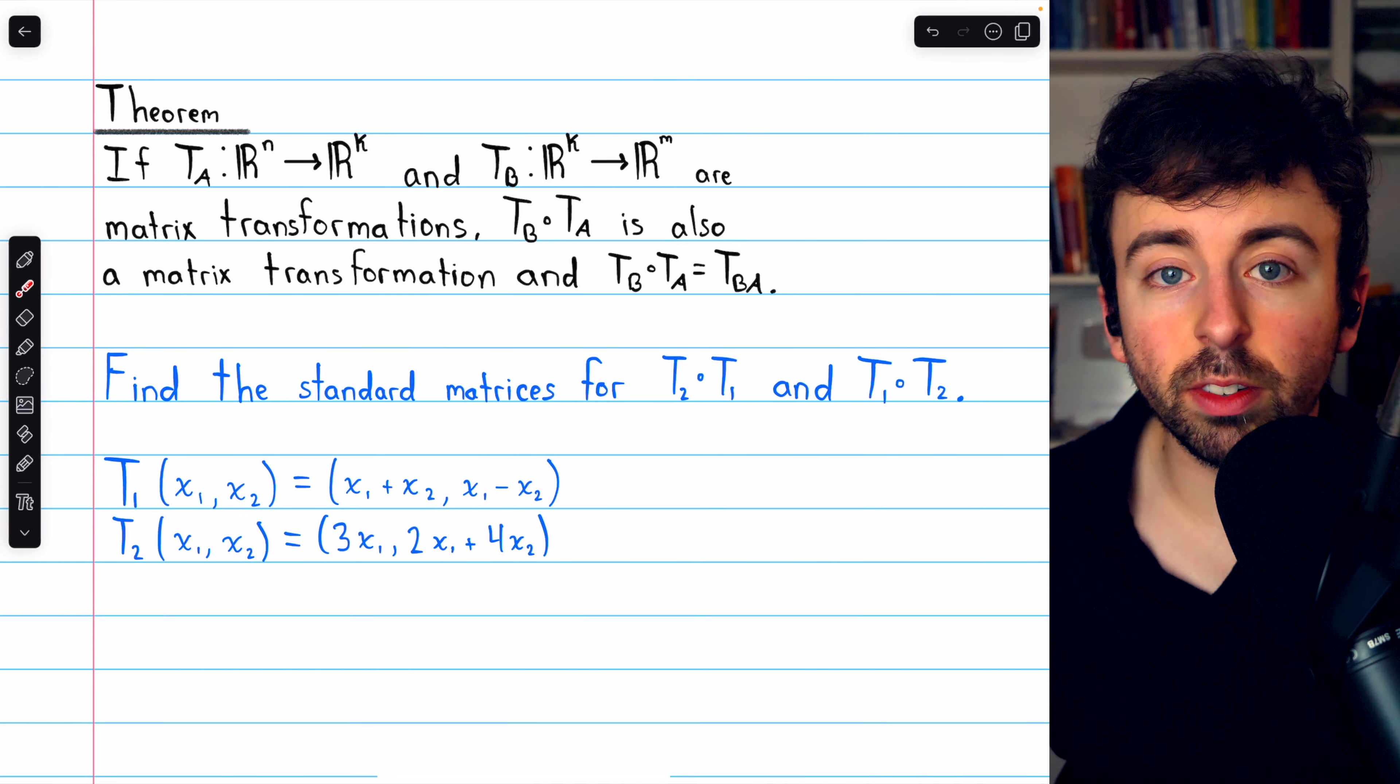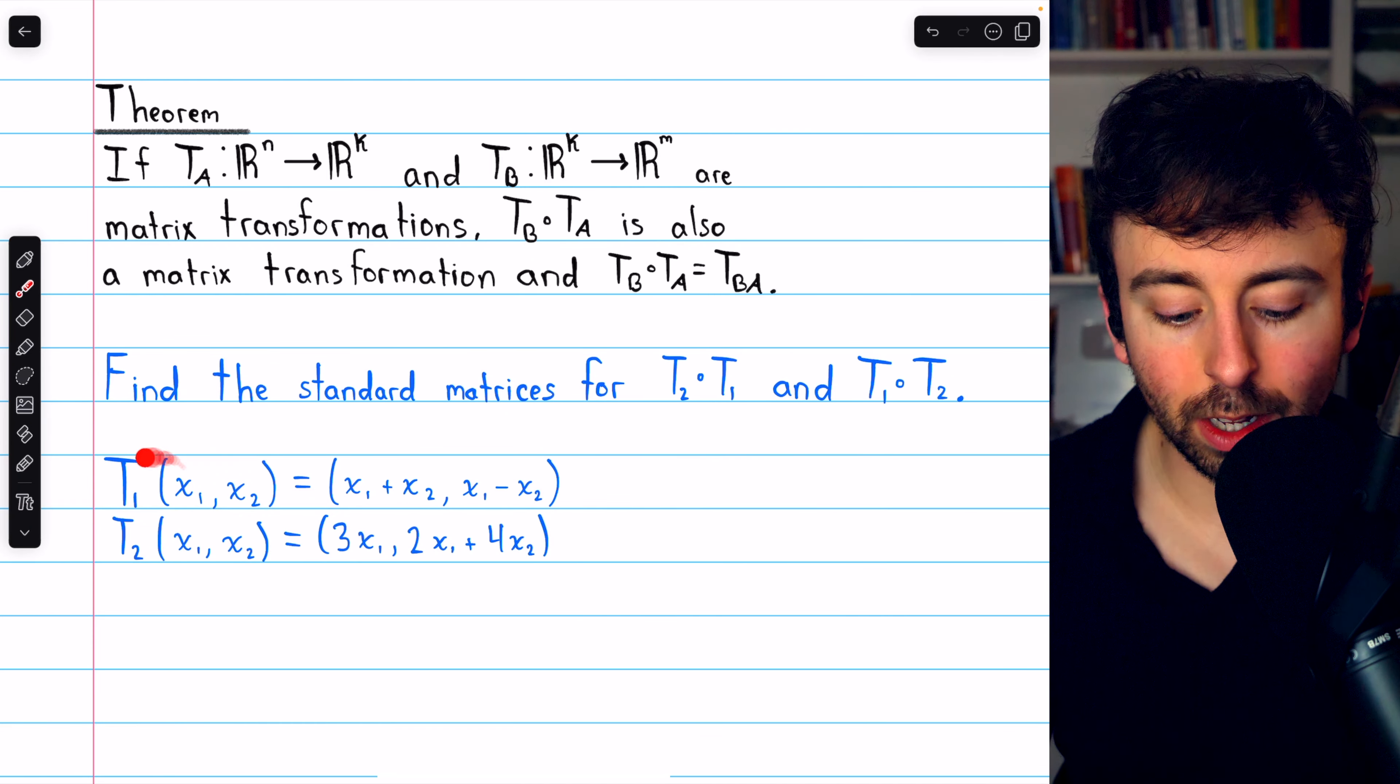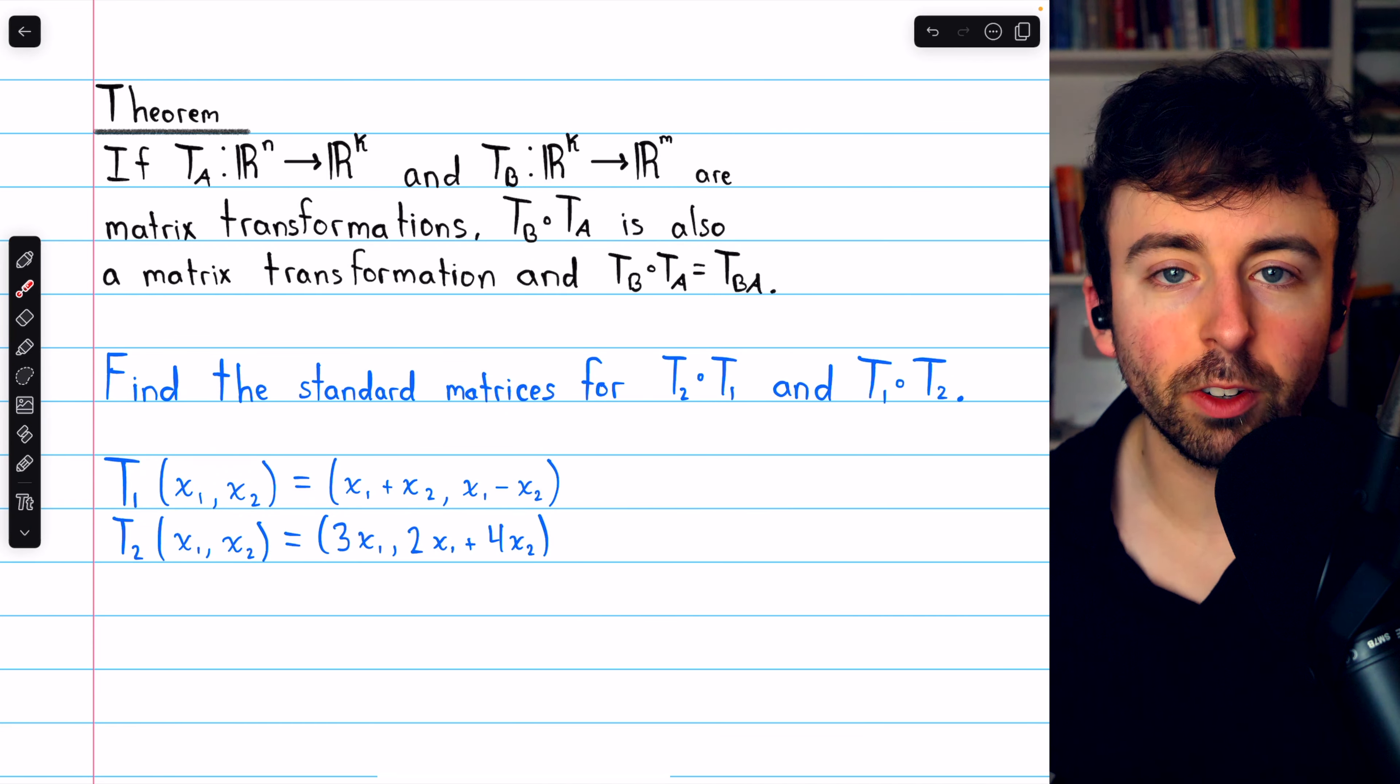So to find the standard matrices for T2 circle T1 and T1 circle T2, we just need to find the standard matrices for these two transformations and then multiply those standard matrices together.